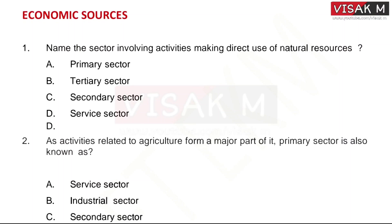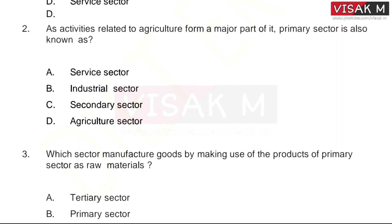Question one: Name the sector involving activities making direct use of natural resources. The options include primary sector. The right answer is Primary Sector. Question two: Activities related to agriculture form a major part of it — the primary sector is also known as dash.